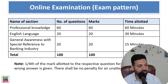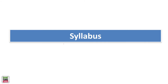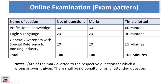This is the exam pattern — give it a look. There is Professional Knowledge: 60 questions and 60 marks, followed by English Language: 20 questions and 20 marks, followed by General Awareness: 20 questions and 20 marks. Total 100 questions and 100 marks. Importantly, sectional timing is there: 60 minutes for Professional Knowledge, 30 for English, and 15 minutes for General Awareness.